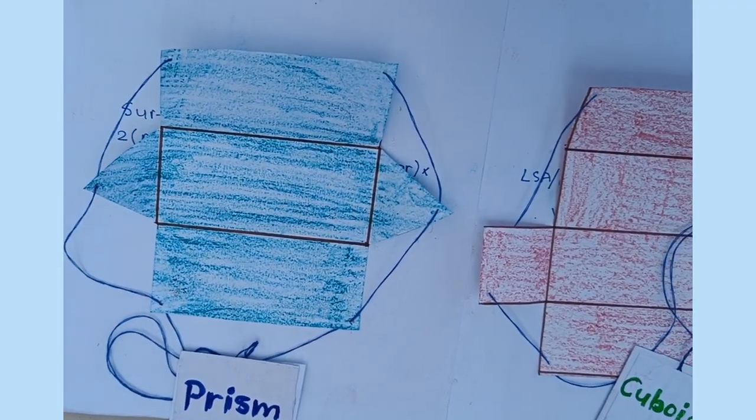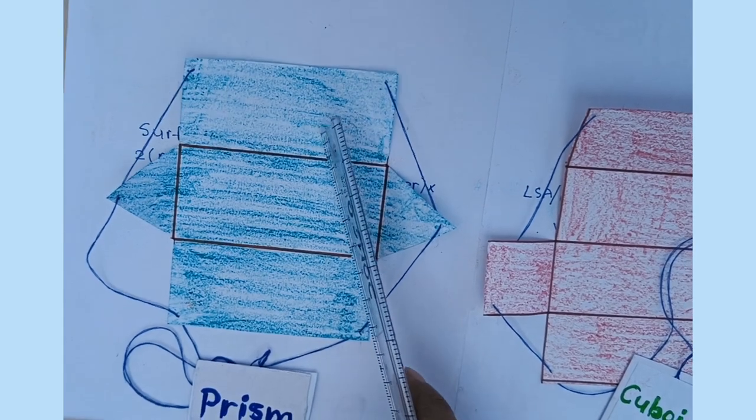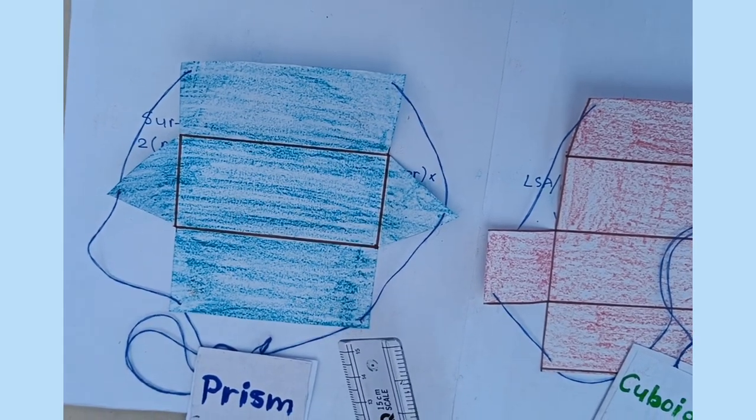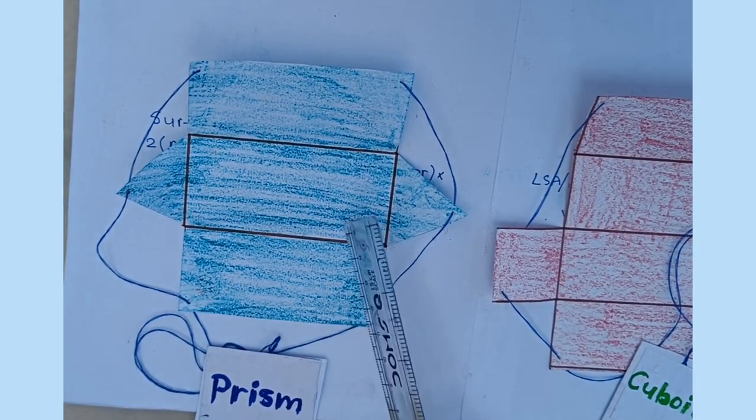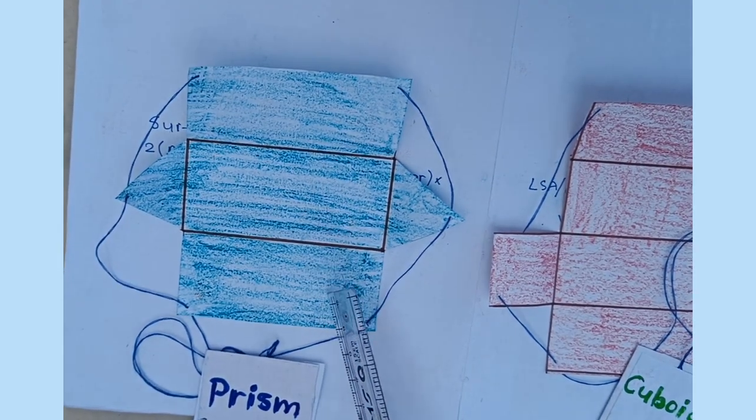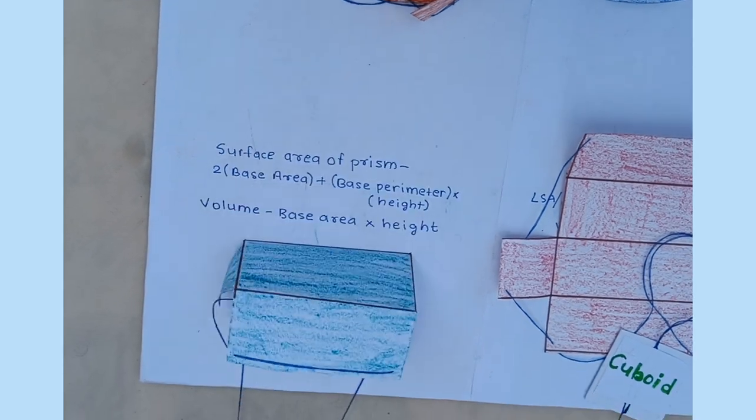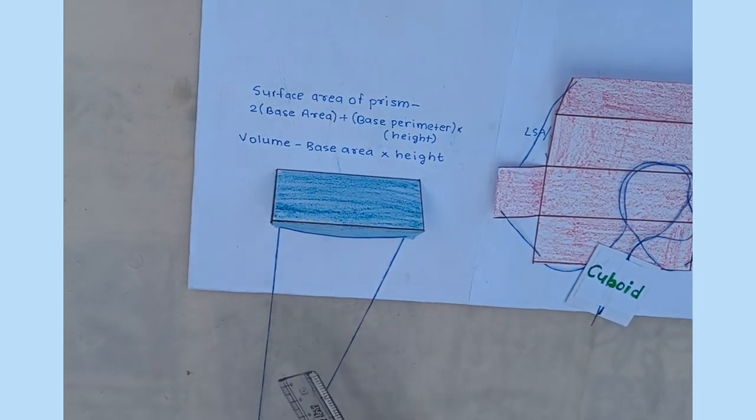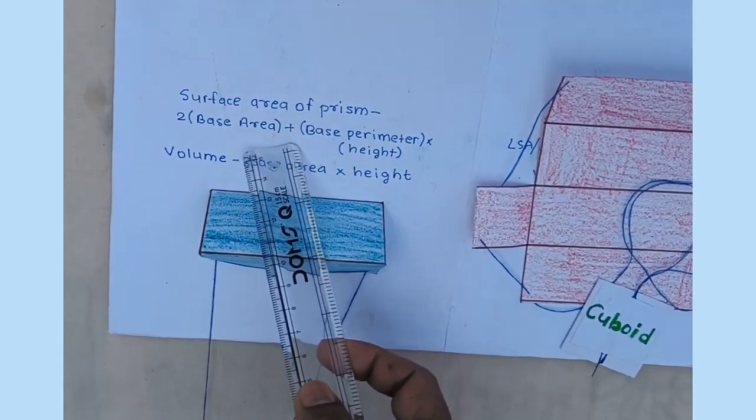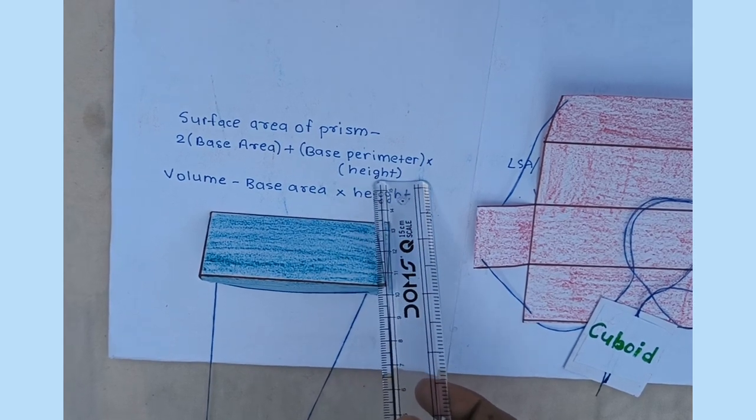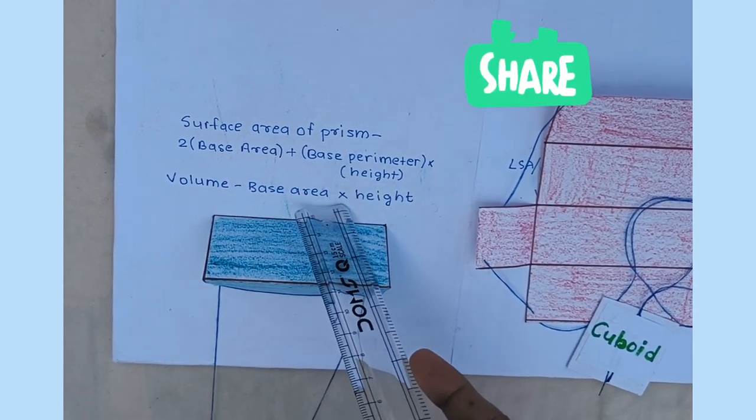In third, here is a prism which has 5 faces. 3 of its faces is rectangle and 2 of its faces is triangle: 1, 2, 3 that are rectangle and 2 faces are triangle. When we fold it, it becomes in the form of prism. The surface area of prism is 2 into base area plus base perimeter into height, and volume is base area into height.